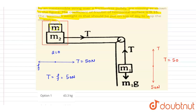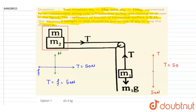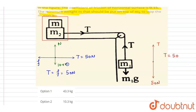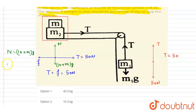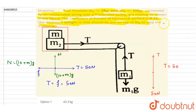Now let us find the value. Looking at the vertical forces on m2: the weight acting downward is (m2 + m)g, where m2 is 10 kg. So the downward force is (10 + m) times g, and the normal reaction acts upward. The normal reaction N equals (10 + m)g.